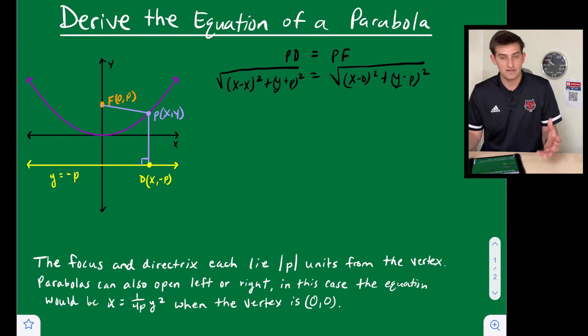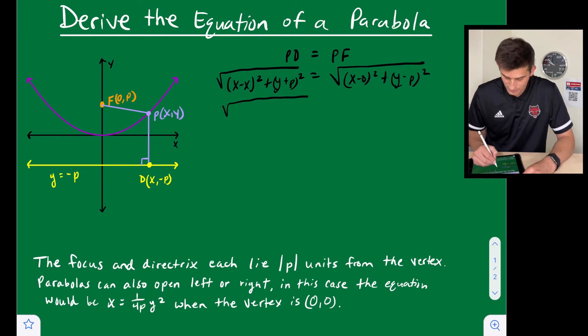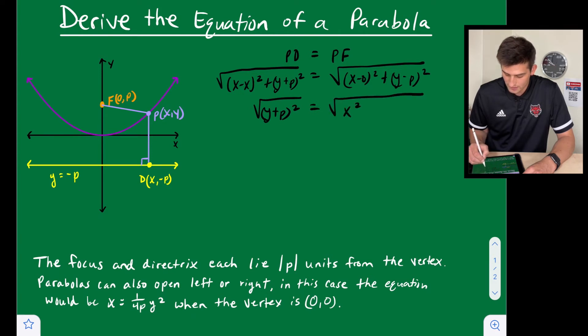All right, now let's simplify this a little bit. x minus x, so that's going to go away, so we can make that a little bit smaller. So we just have √[(y + p)²] is equal to √[x² + (y - p)²]. Now what we can do is get rid of our radical by squaring both sides, and so now we have (y + p)² = x² + (y - p)².